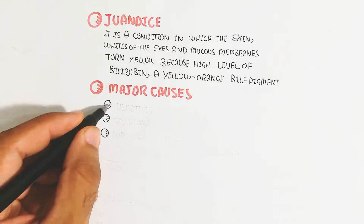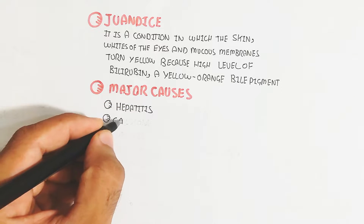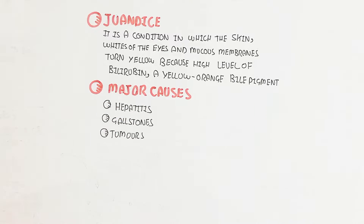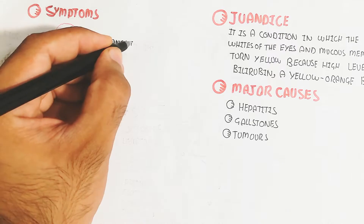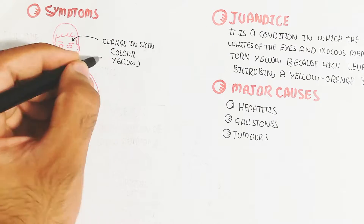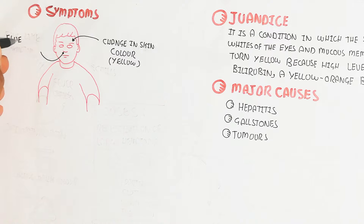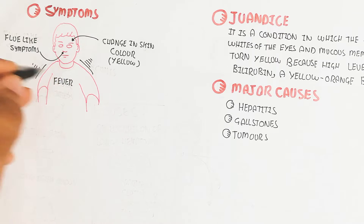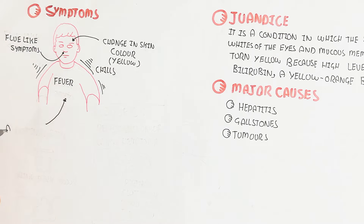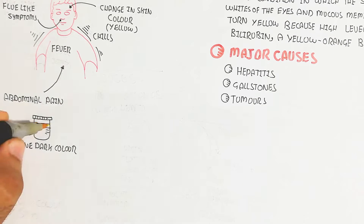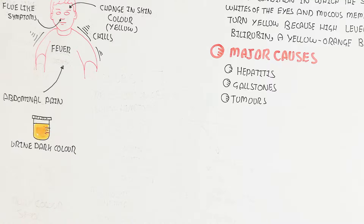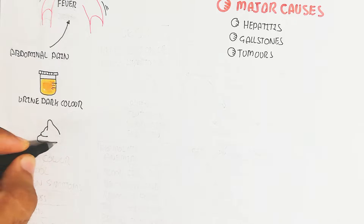The major causes include hepatitis (liver problems), gallstones (stones in the gallbladder), and tumors in the gallbladder. Symptoms include a change in skin color to yellow, chills, fever, high fever due to inflammatory response, flu-like symptoms, abdominal pain, and dark-colored urine — yellowish-orange or very dark.